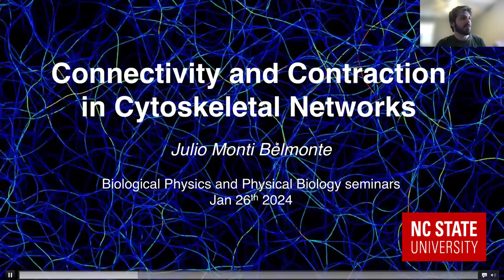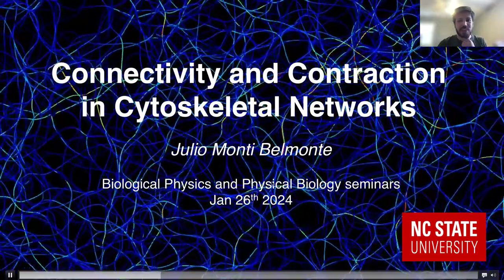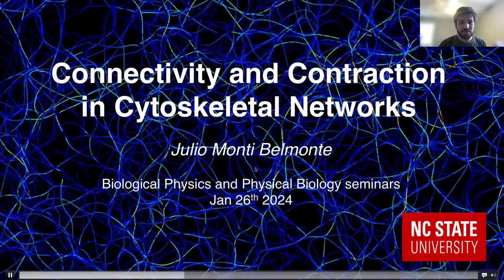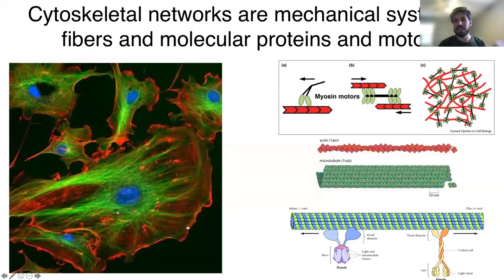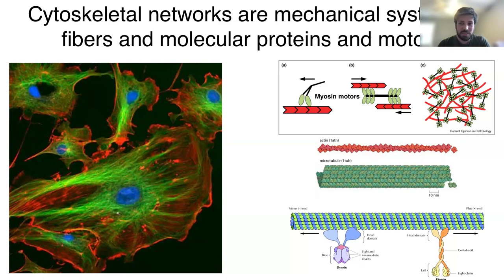I would like to talk about cognitive contraction of cytoskeleton networks. For this audience, all of you know what a cytoskeleton is — it's a mechanical system made of filaments, molecular motors, and proteins that is important for many functions of the cell. There are three main cytoskeleton networks: the actin, the microtubules. Microtubules are mostly responsible for keeping the cell in shape, but actin is more active — it actually makes the cell move and divide.